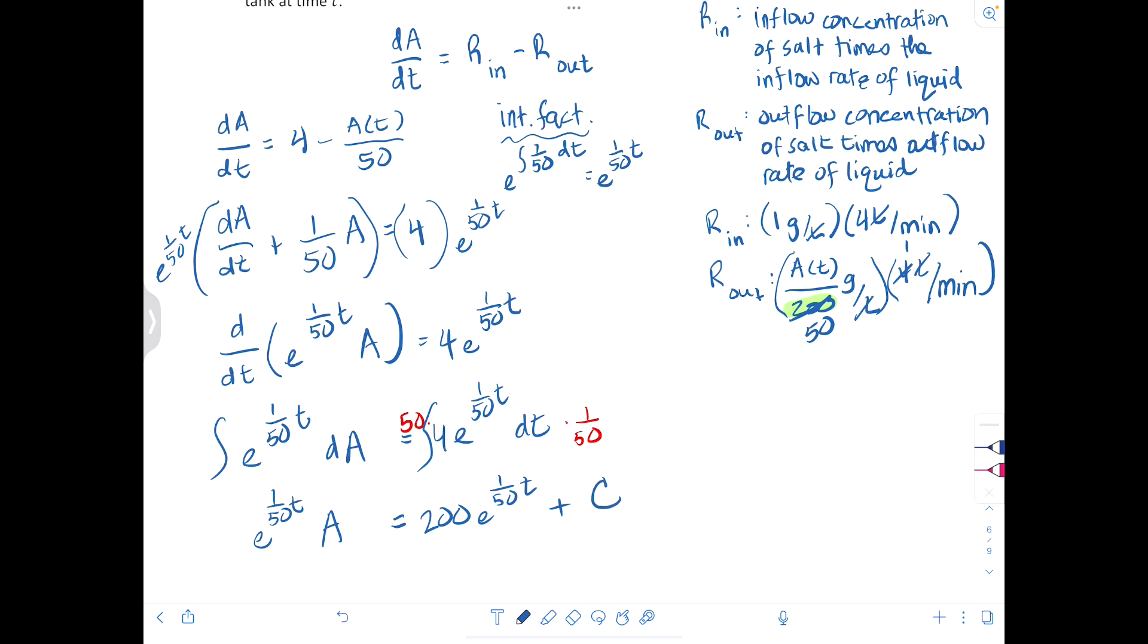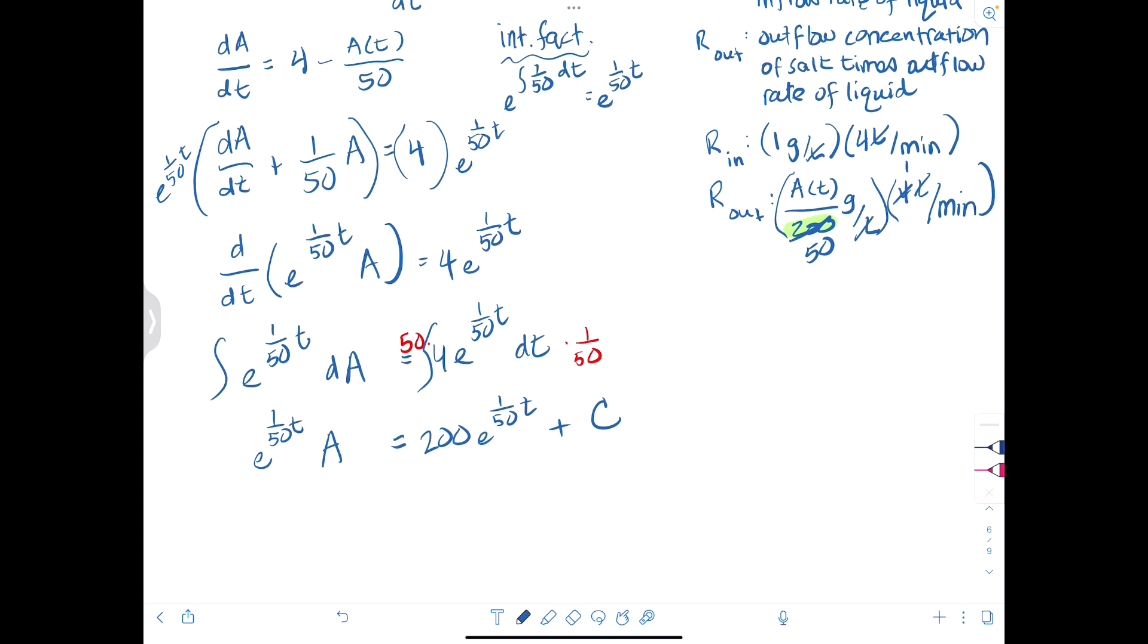And then isolating A, we will have - so we're basically going to multiply both sides by e to the negative t/50 - to get 200 and then plus C e to the negative t/50. And that would be the amount of salt at time t.